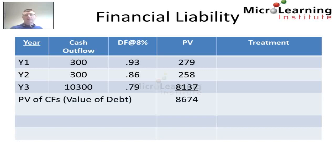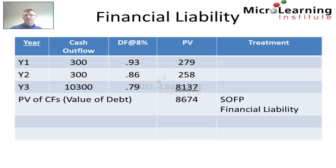The total of these three future cash flows expressed in present value terms is $8.674 million, and this is the value of the debt component. This is the value that the market rate would place on the future cash flows given the discount of 8%. This debt component is represented on our statement of financial position as a financial liability.